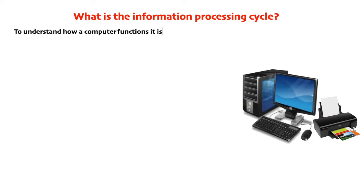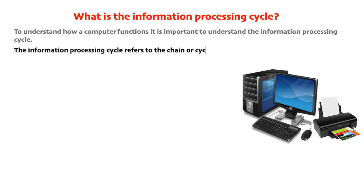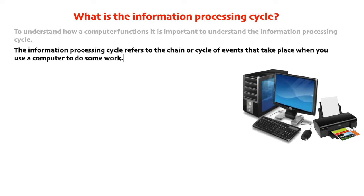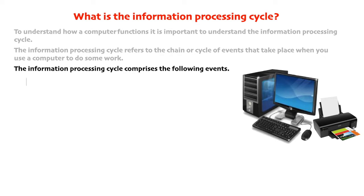To understand how a computer functions, it is important to understand the information processing cycle. The information processing cycle refers to the chain or the cycle of events that take place when you use a computer to do some work. The information processing cycle comprises the following events.